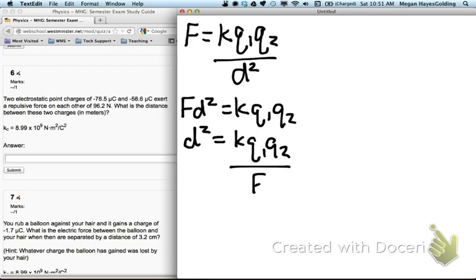And then finally, to solve for D rather than D squared, I'll execute the square root of both sides of this equation.